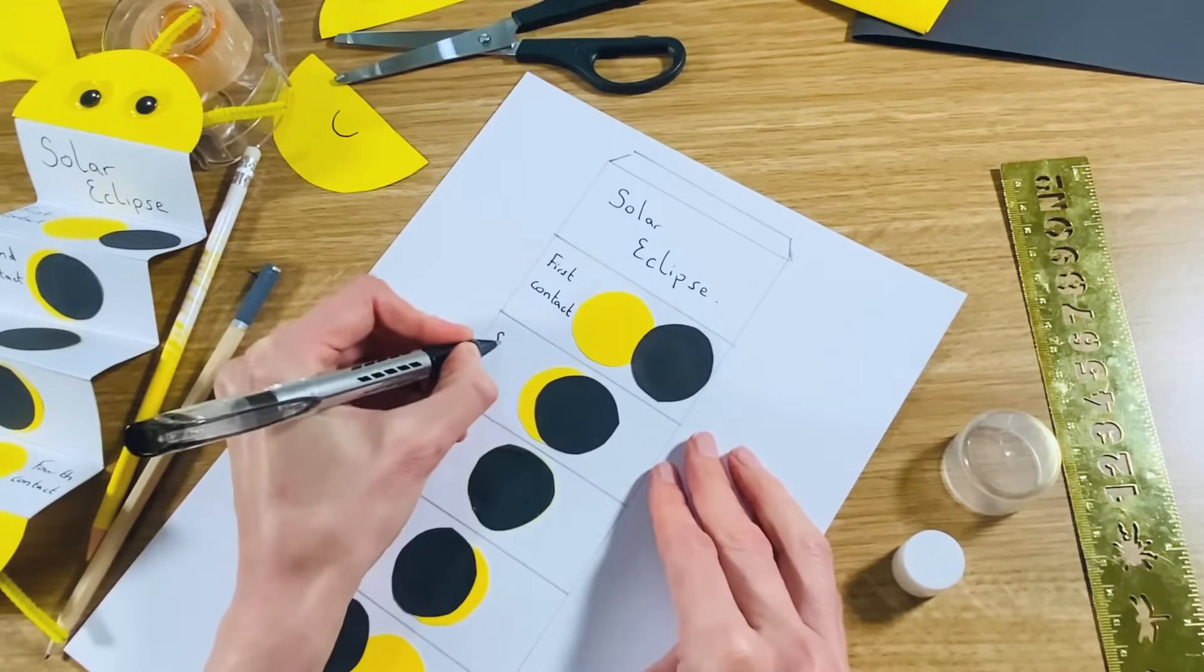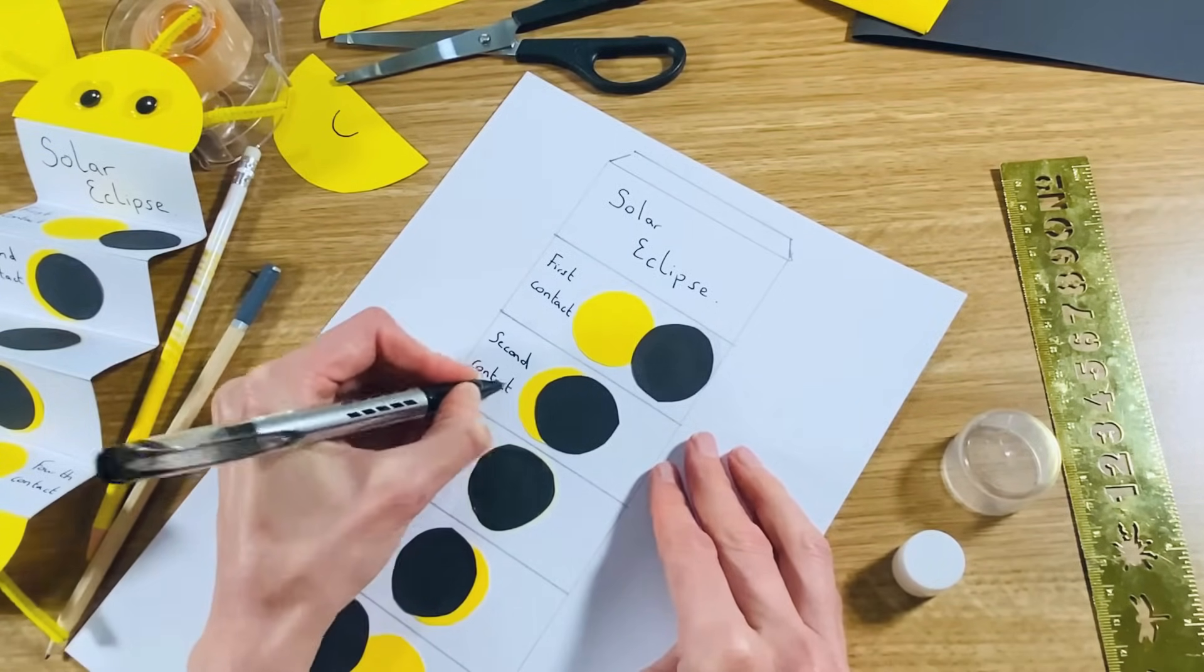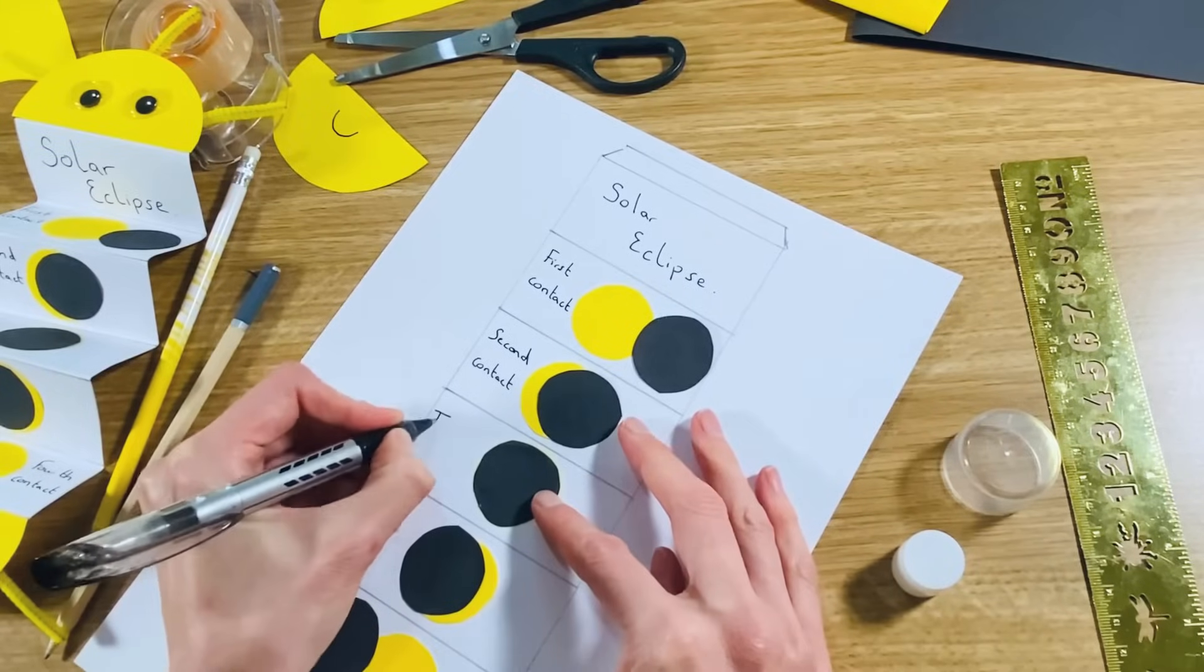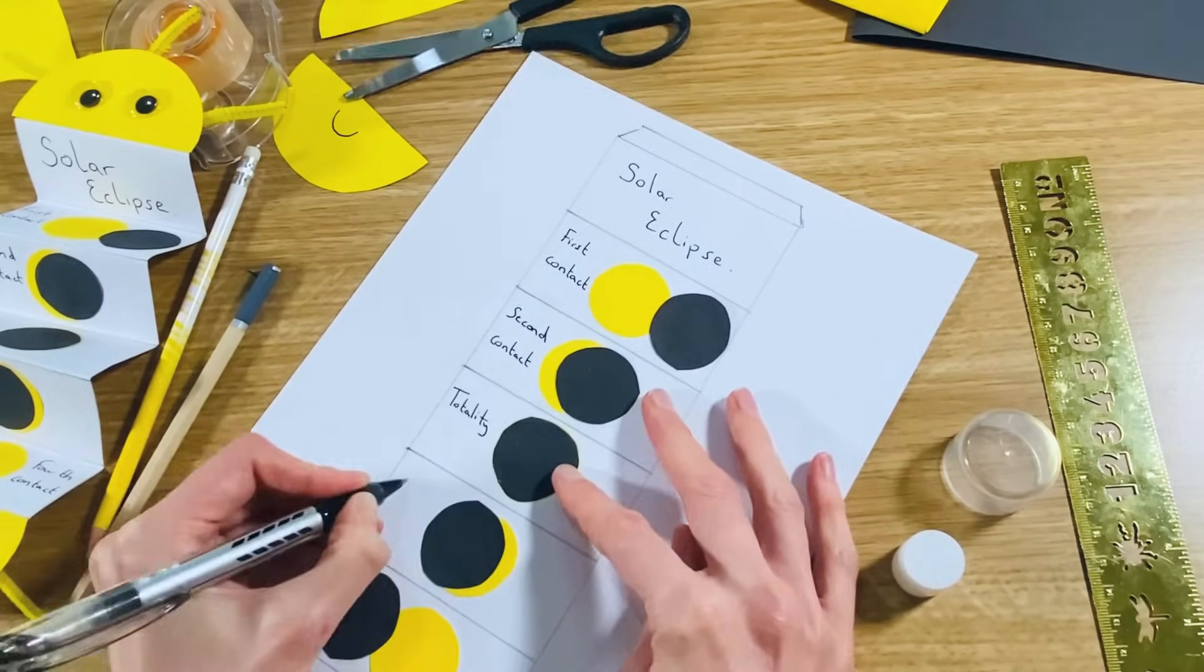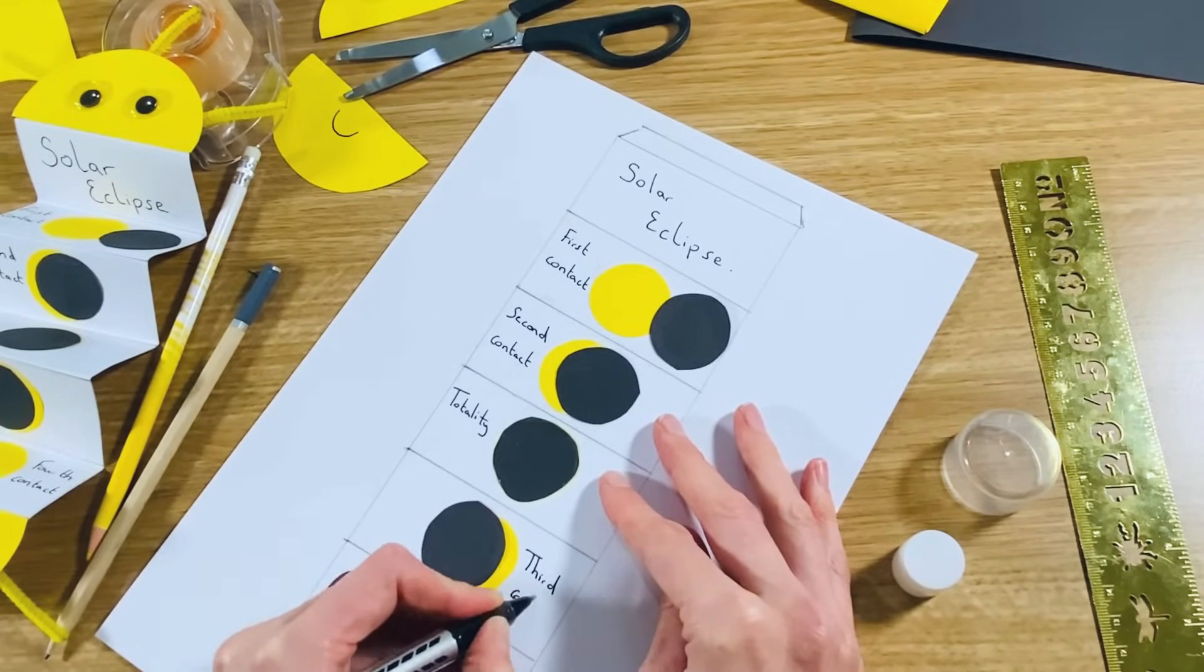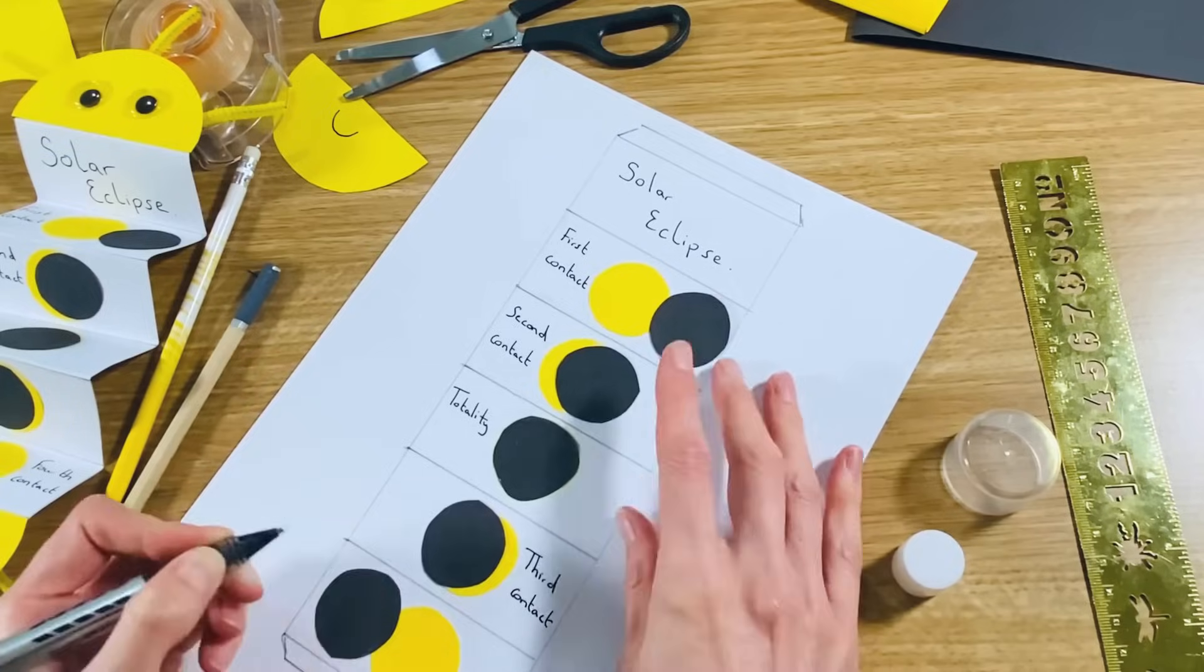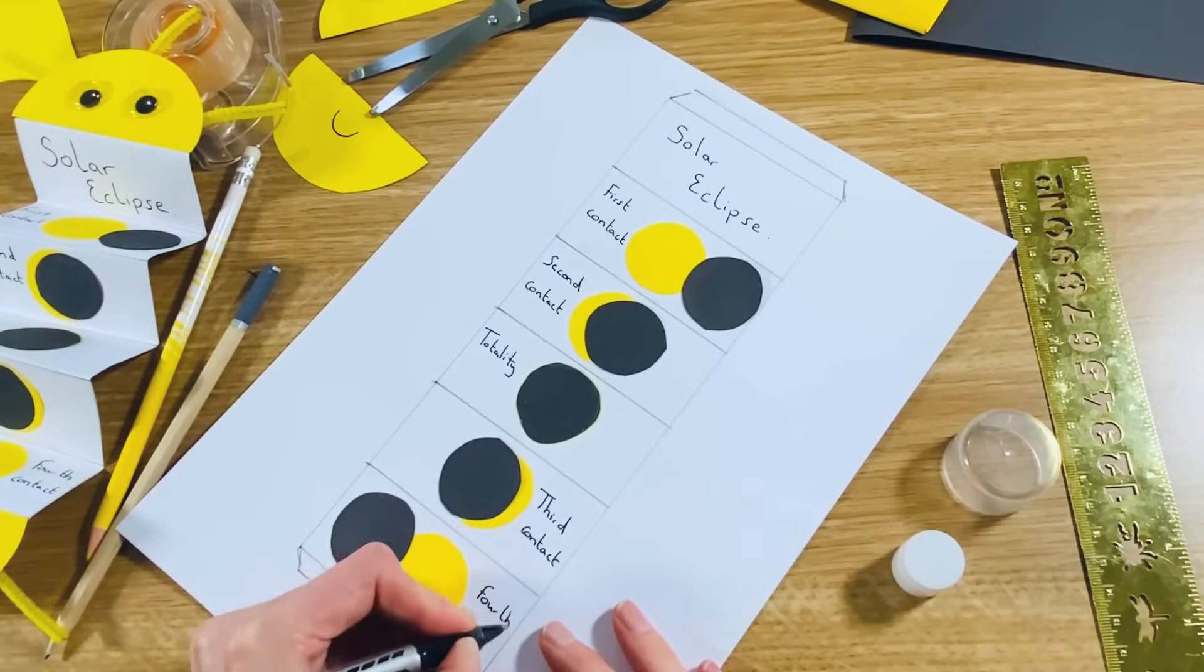This one is called second contact, and we've got totality, third contact, and then last of all, fourth contact.